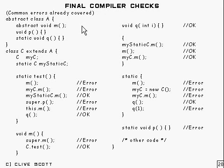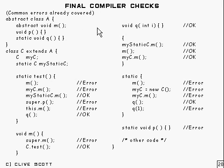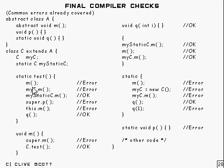Now we've found the method that we're trying to call, there are still a couple of final checks that the compiler does. These are the common sort of things we've covered already. I've split this up into two columns. Let's start and have a look at the first call here. This is an error, and the reason for that is this is a static method and this is an instance method here. You can't call an instance from a static like that, so it's an error.